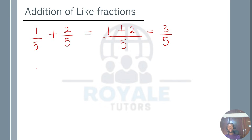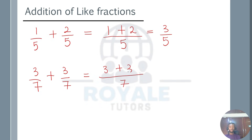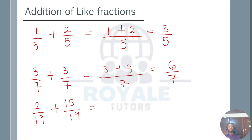Another example: 3 over 7 plus 3 over 7. These are like fractions. The denominator remains the same — 7 — and we deal with the numerators: 3 plus 3 gives us 6 over 7. Another example: 2 over 19 plus 15 over 19. The denominator remains 19, and 2 plus 15 gives us 17 over 19.